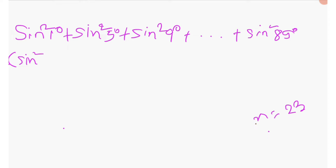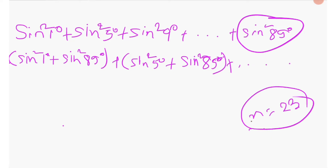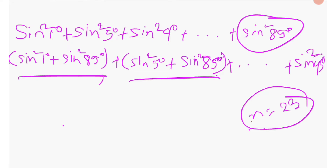We rewrite the series by pairing the first and last terms: (sin square 1 degree plus sin square 89 degree), then (sin square 5 degree plus sin square 85 degree), and so on. Since there are 23 total terms, one middle term — sin square 45 degree — will be left unpaired. There will be 11 such pairs, accounting for 22 terms, with sin square 45 degree remaining.